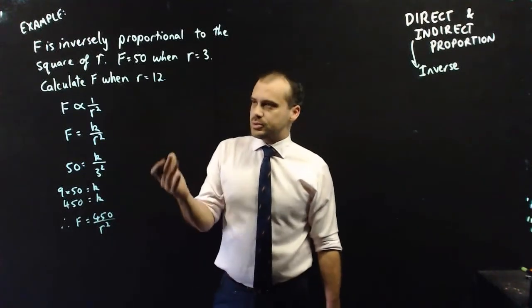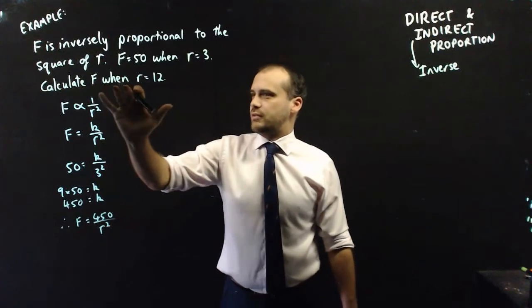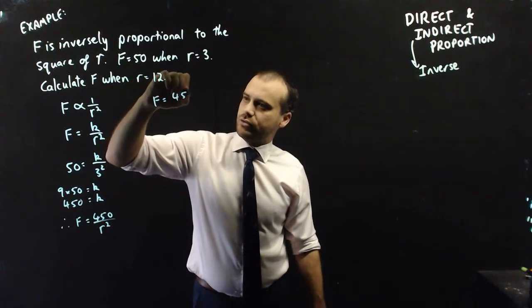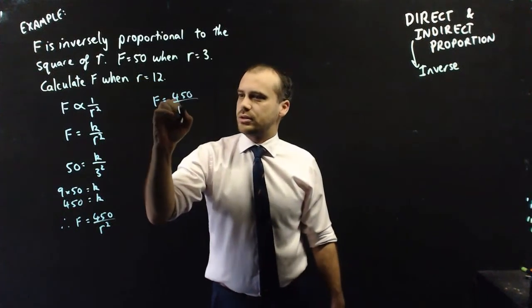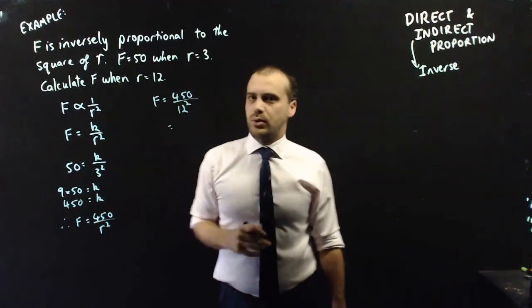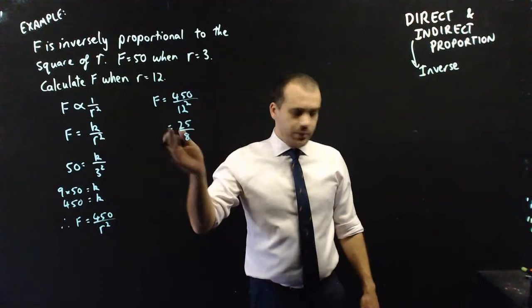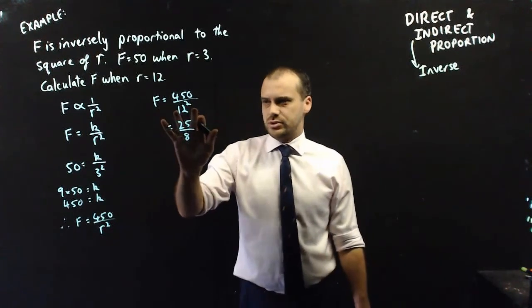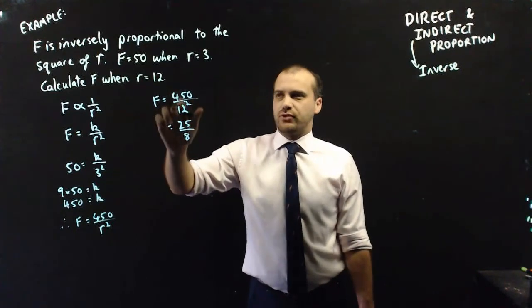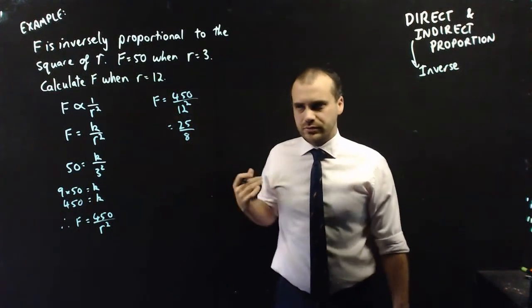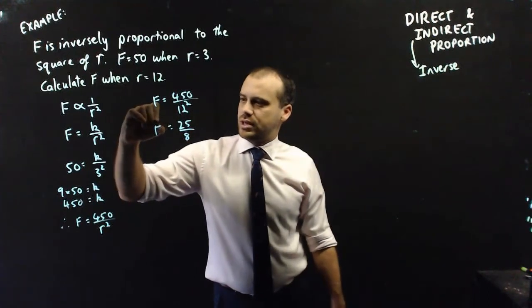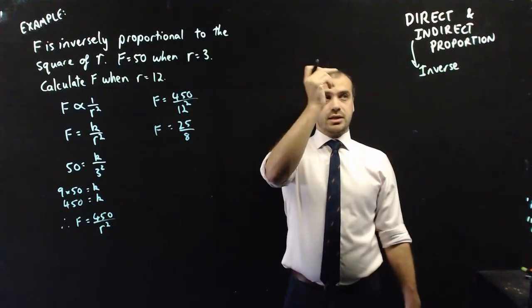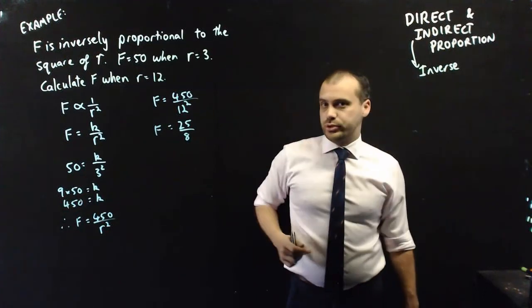And then the last part of the question says, calculate f when r equals 12. f equals 450 divided by 12 squared. Calculator. And we get an answer of 25 over 8. Now, you didn't have to use a calculator there. Squaring 12, 144. And then simplify the fraction just by finding common factors. But our answer for f here is 25 over 8. All right, that is direct and indirect or inverse proportion.